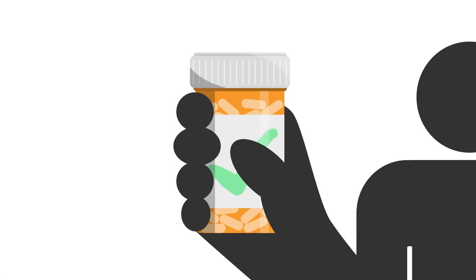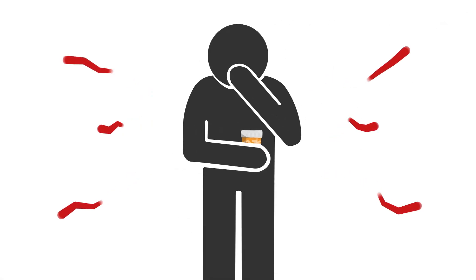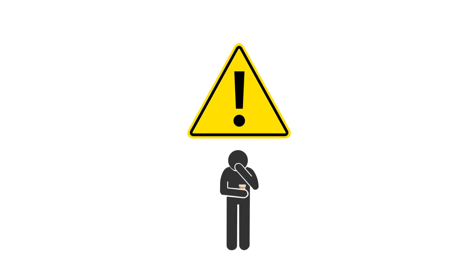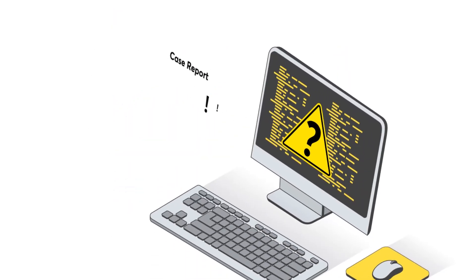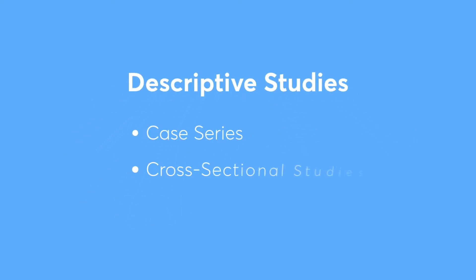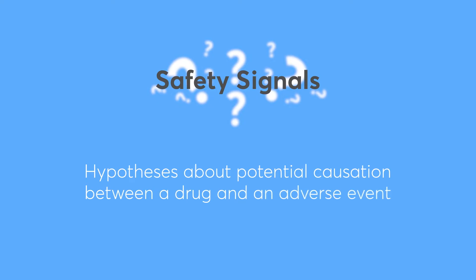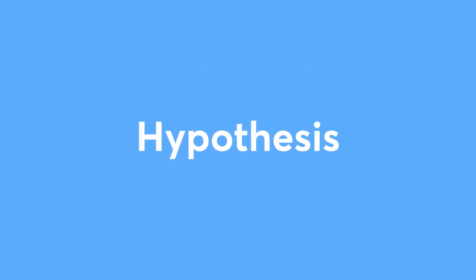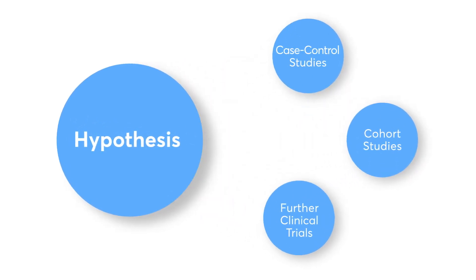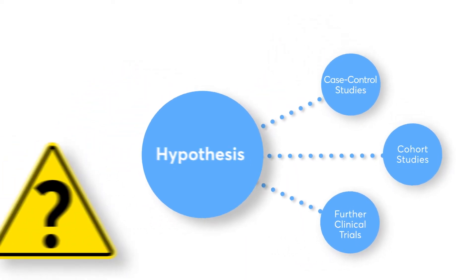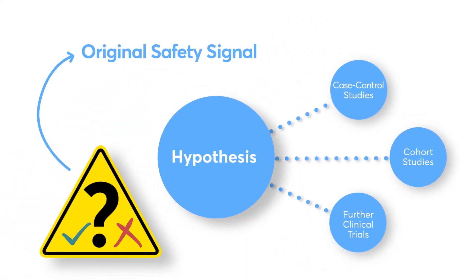Once a new medication is approved for use, adverse drug reactions may be reported spontaneously. For example, in the U.S., the Food and Drug Administration (FDA) collects reports from patients and clinicians through MedWatch. Case report data and other descriptive studies like case series, cross-sectional studies, and ecologic studies can be used together to identify safety signals, which are hypotheses about potential causation between a drug and an adverse event. Once a hypothesis is determined, analytic study methods, including case-controlled studies, cohort studies, and further clinical trials, are used to test the hypothesis to confirm or refute a safety signal.